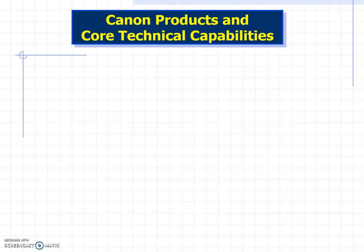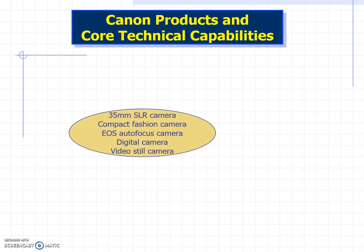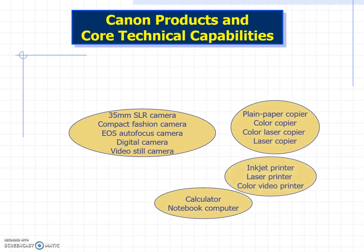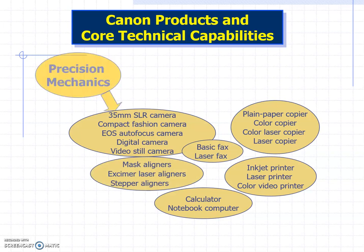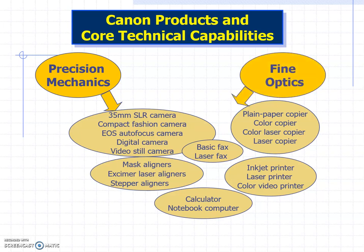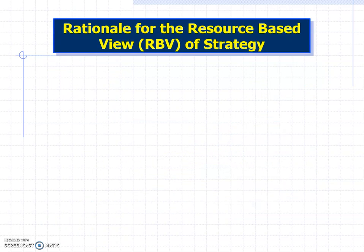Finally, let's look at Canon and their core technical capabilities. Canon is known for making SLR cameras, compact cameras, autofocus digital cameras, video cameras, calculators, notebook computers, copiers, laser copiers, inkjet printers, laser printers, fax machines, and medical equipment. Their capabilities are in precision mechanics and fine optics, and they're able to translate these into various industries and products. The core basis of their strategy is their internal resources and capabilities, including microelectronics.